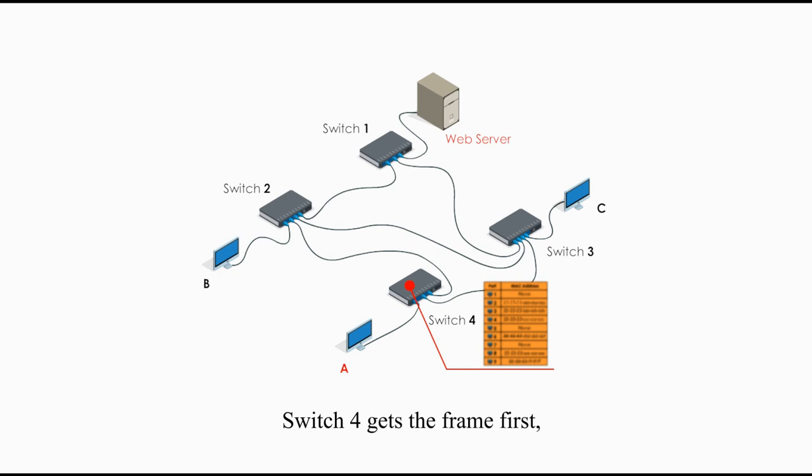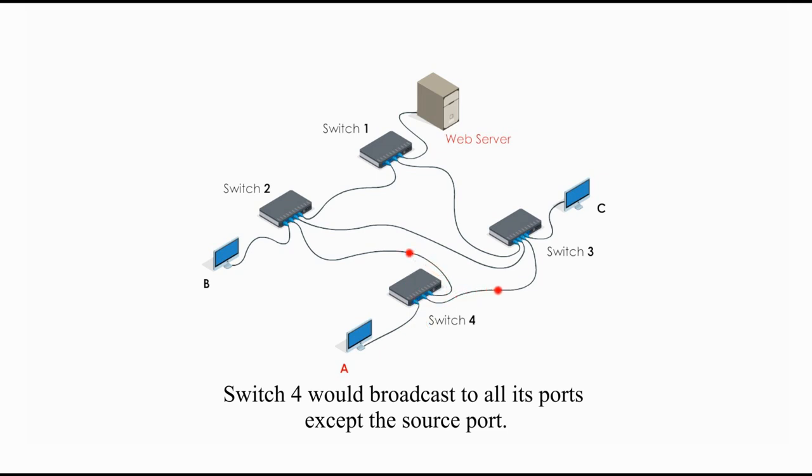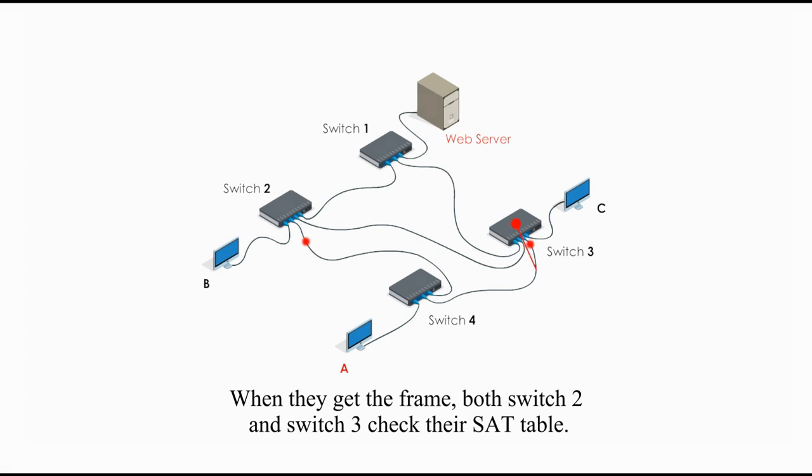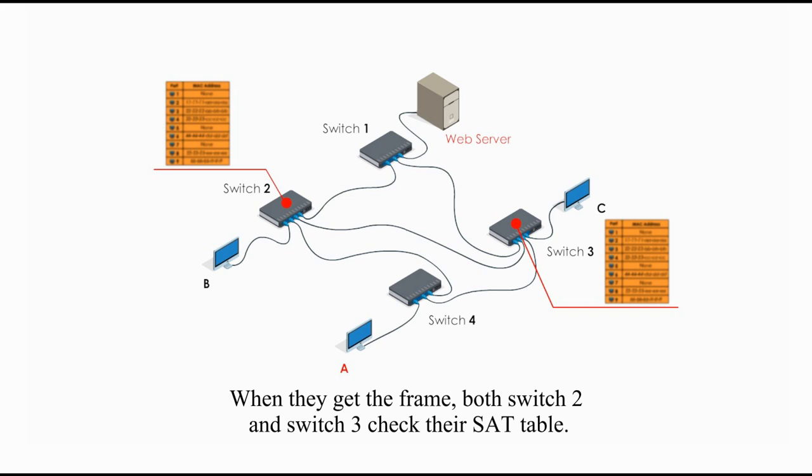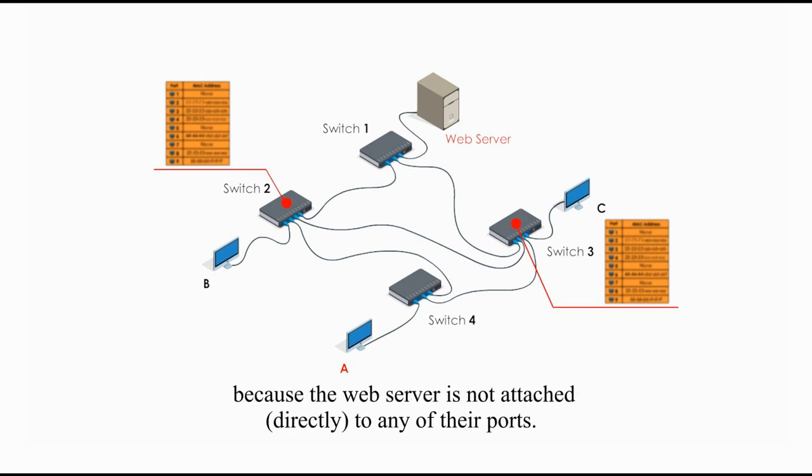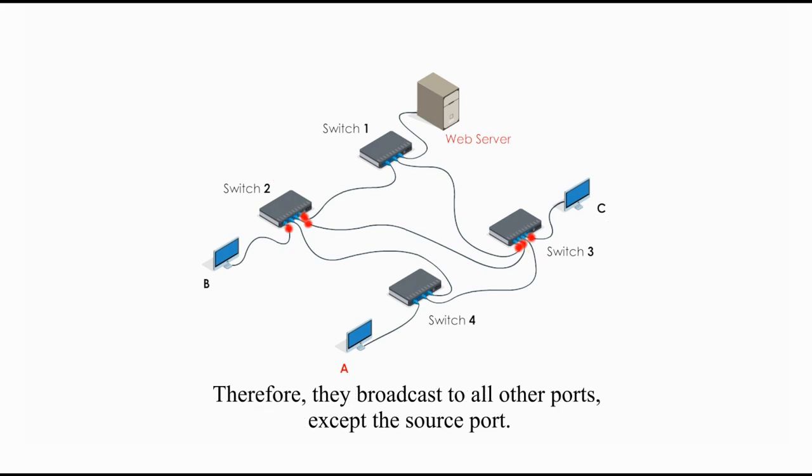Switch 4 gets the frame first, and it checks the destination MAC address against its set table, and it does not see the web server's MAC address. Switch 4 would broadcast to all its ports, except the source port. That's why the frame is sent to both switch 2 and switch 3. When they get the frame, both switch 2 and switch 3 check their set table. They do not see the destination MAC address in their set table because the web server is not attached to any of their ports. Therefore, they broadcast to all other ports, except the source port.